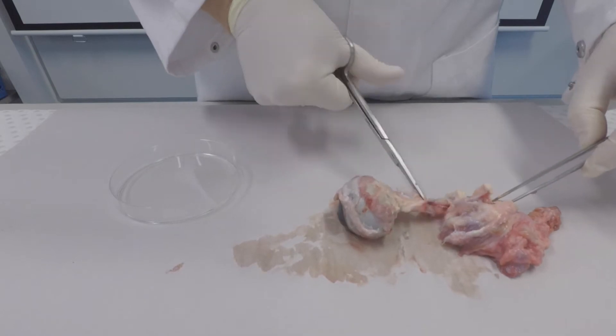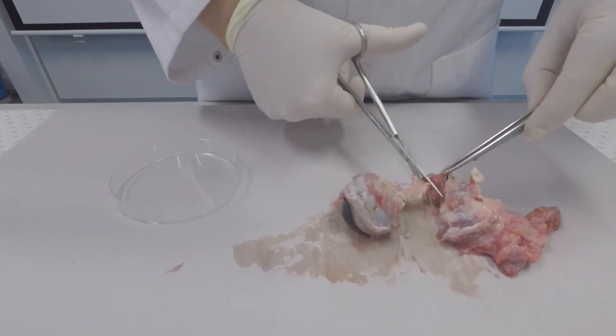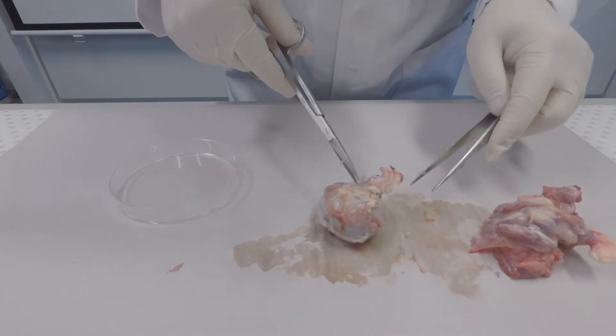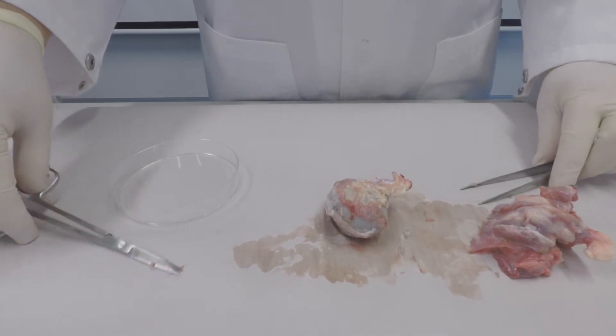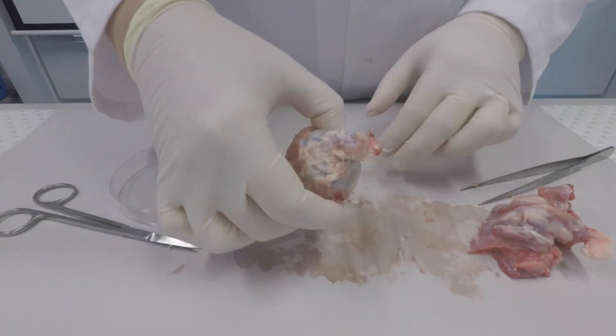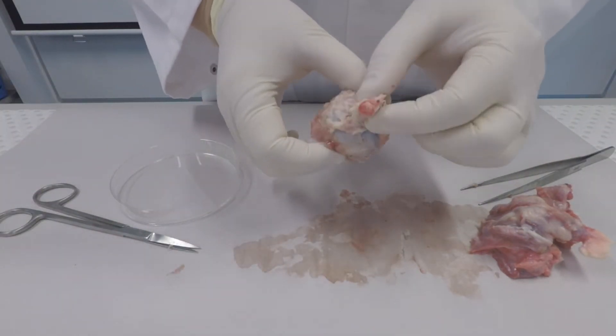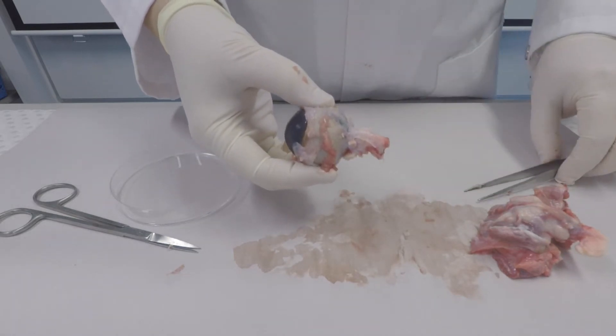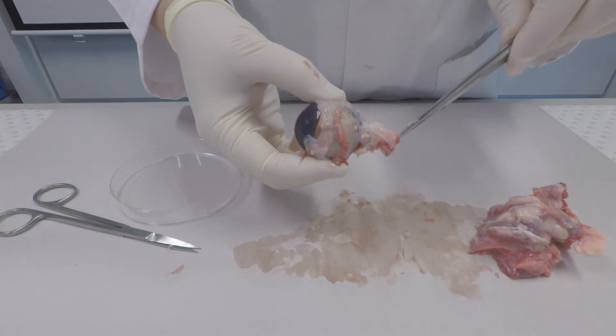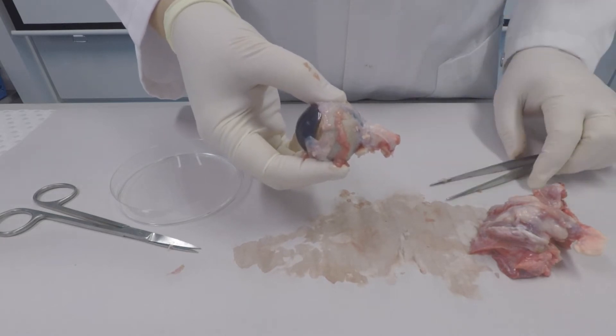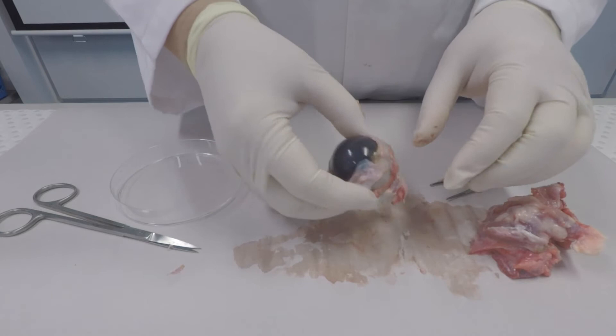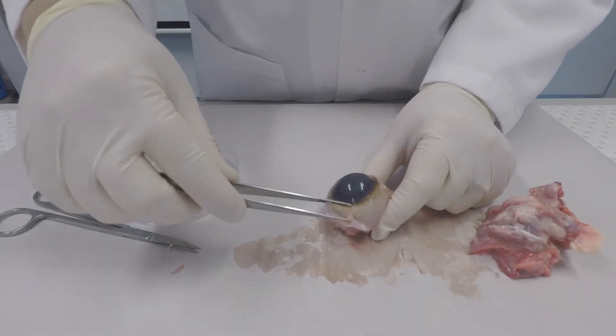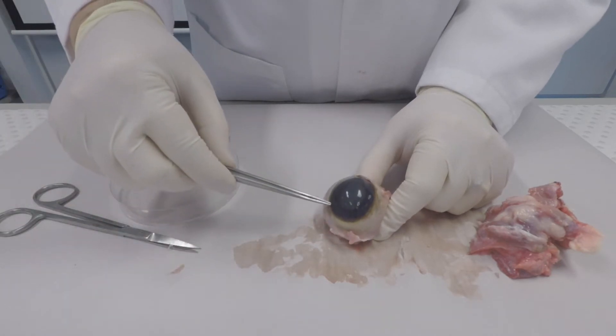I'm trying to remove the fatty tissue and remaining muscle tissue to show you the optic nerve. The optic nerve is a cranial nerve. It captures visual sensory information and carries it to the brain.